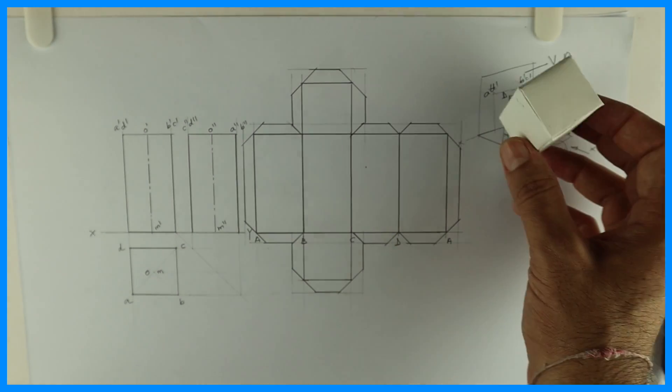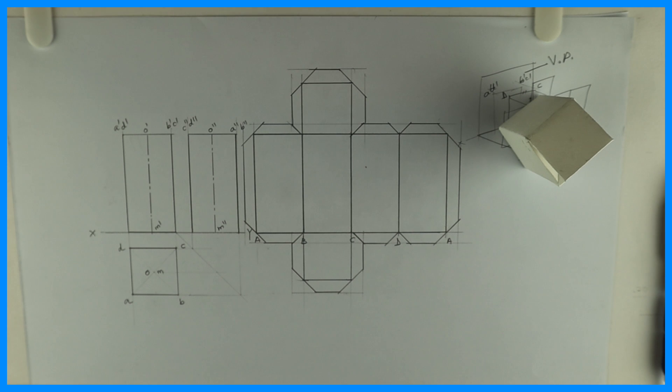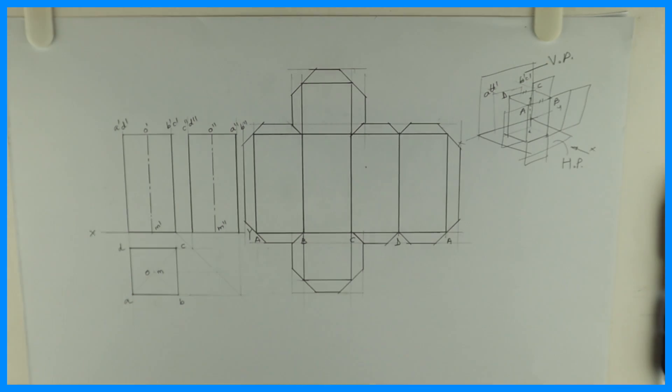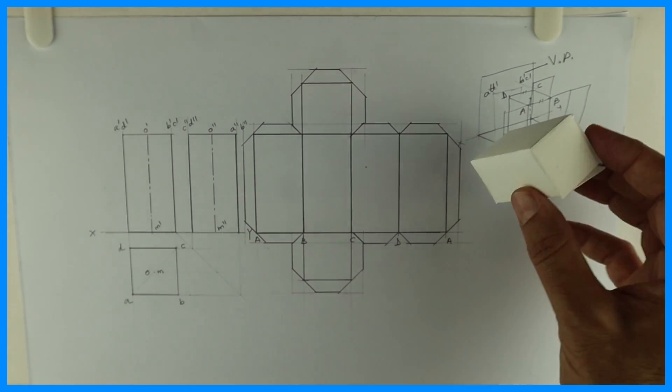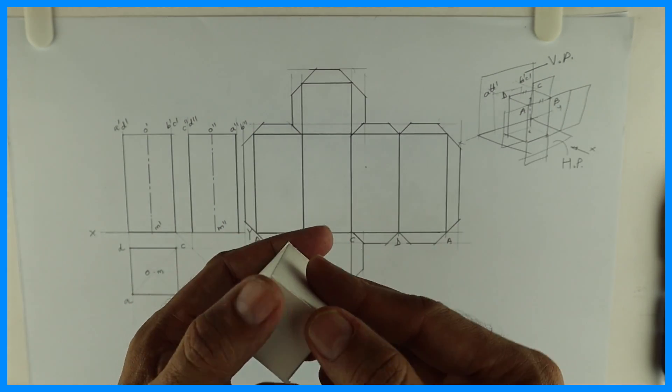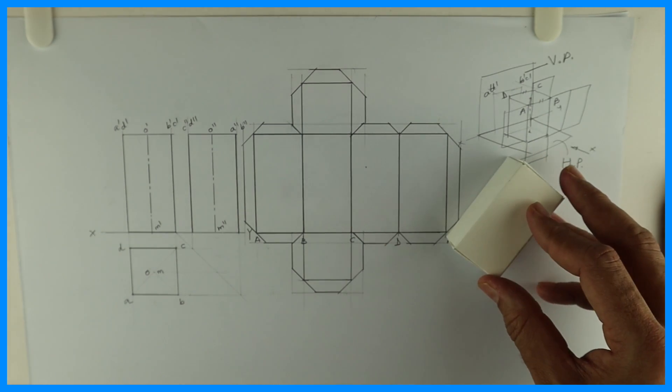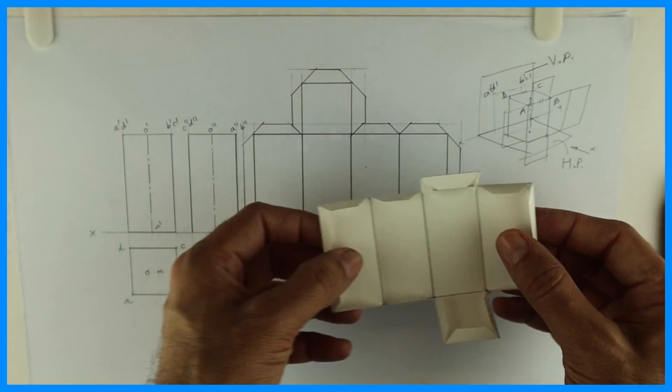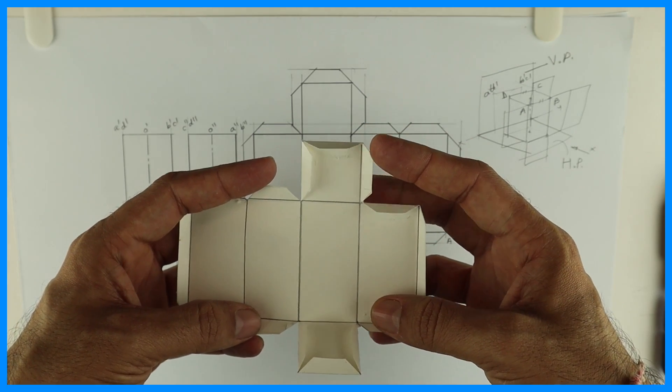See this square prism. See this, so this is a square prism, when you see from the top, it looks like this. Square you can see, right? So, this is square prism, this is how it will look. And when you open it, this is how it will become, development. This is total surface development.